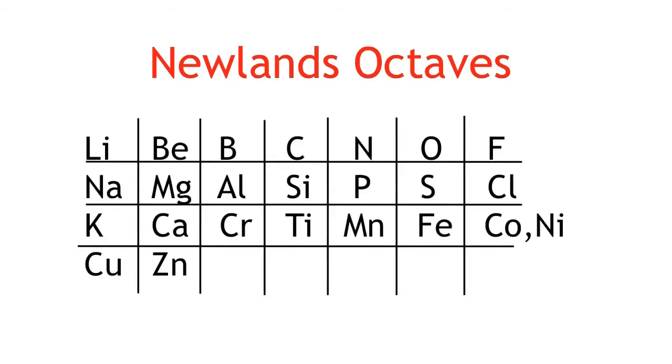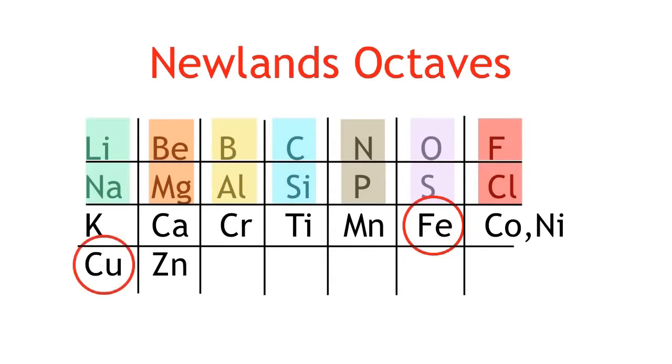His pattern only worked up to a certain point. It broke down on the third row, with the transition metals like iron, copper, and zinc causing a massive flaw in his theory.